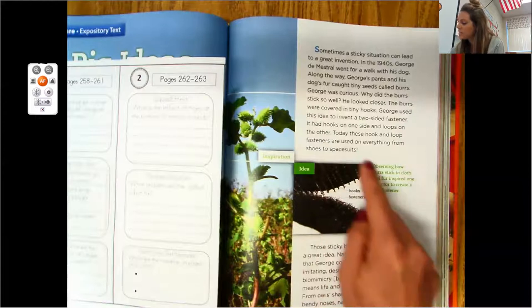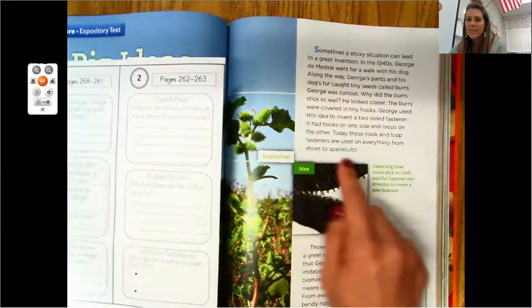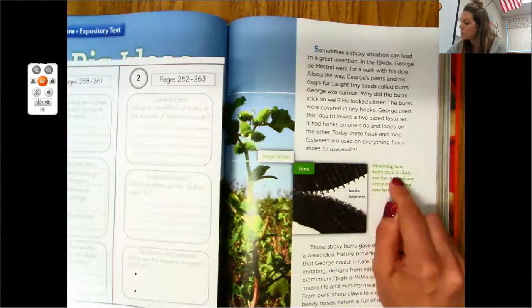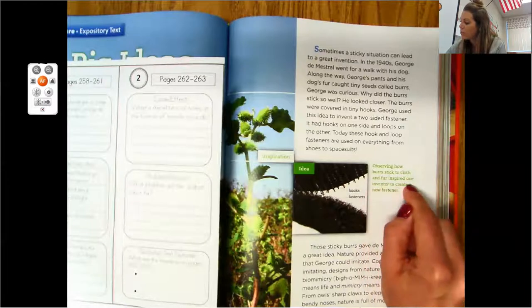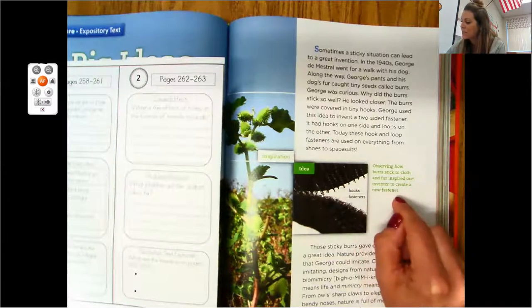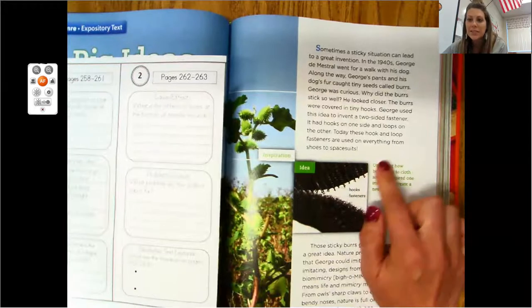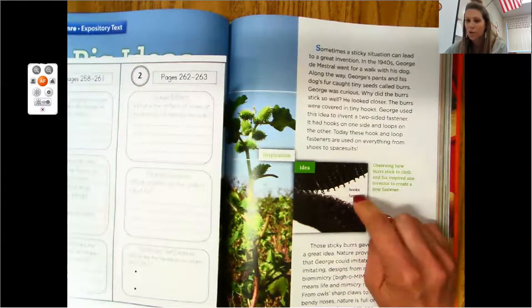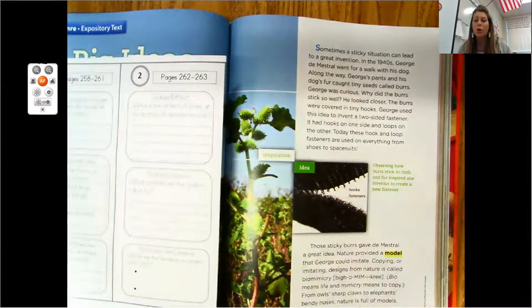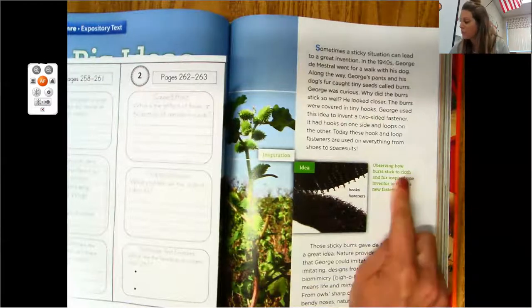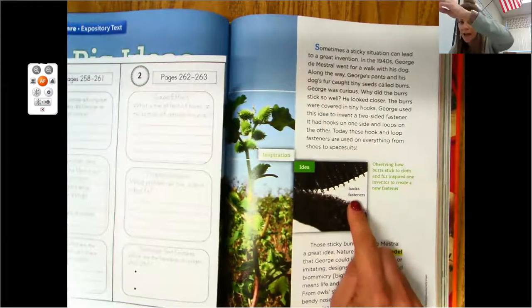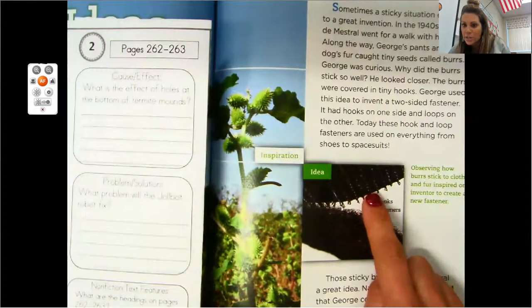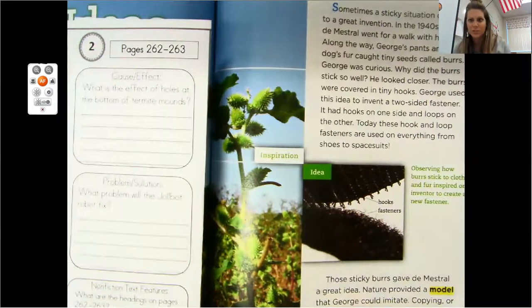So here is his idea. His inspiration from nature. Observing how burrs stick to cloth and fur inspired one inventor to create a new fastener. So remember this is called a caption and it goes with our photograph, a real picture. And these are all called non-fiction text features. So a caption, we've got a photograph and we also have labels. So they're zooming in and they're showing us here's those little hooks and here's the little fasteners. It almost kind of looks like velcro.